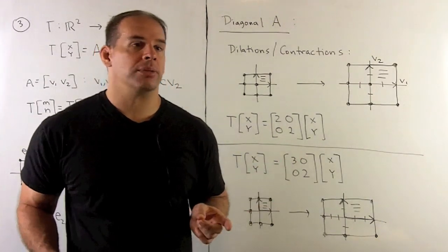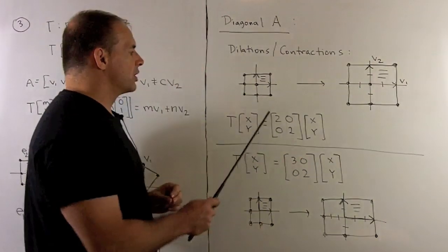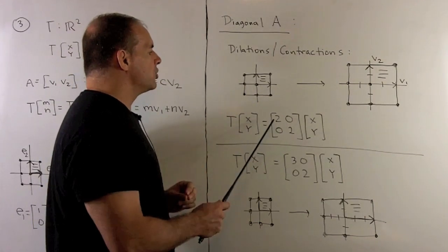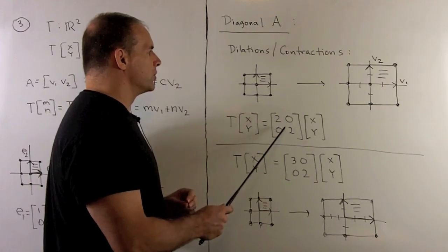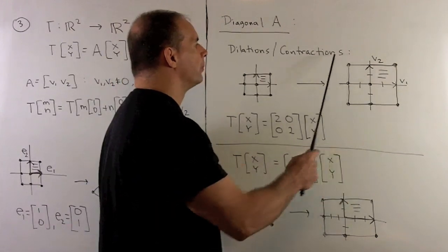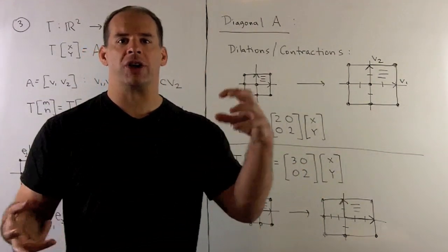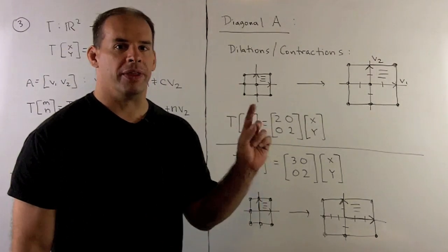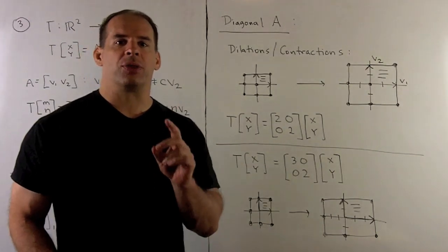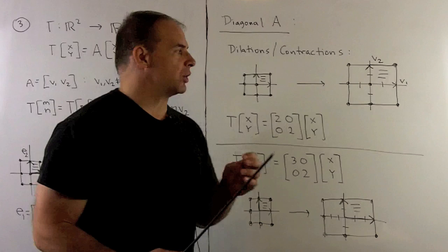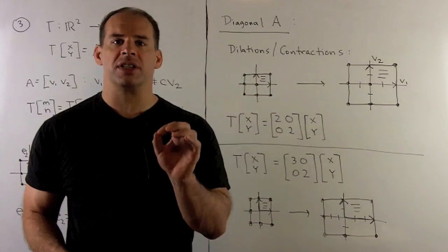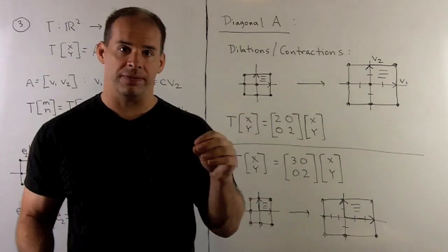For an example of a dilation, using the matrix [2,0,0,2]: E1 goes to (2,0) and E2 goes to (0,2), so this grid gets mapped to the stretched grid here. We're stretching in all directions by a factor of 2. Notably, each line through the origin gets mapped back to itself — each line is stretched by a factor of 2. Points are not fixed except for the origin, but the lines themselves are fixed.